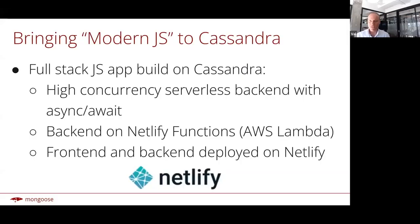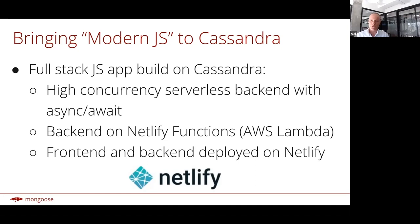What's really exciting about this is not only are we bringing modern JavaScript to Cassandra, but we're also bringing Cassandra to modern JavaScript developers. This e-commerce sample app is a full stack JavaScript application built on top of Cassandra via the Stargate JSON API. We have a serverless backend with async/await deployed on Netlify Functions, which is Netlify's white-labeled AWS Lambda under the hood. Frontend and backend are both deployed on Netlify, so JavaScript developers can start using Cassandra with the tools they're used to.